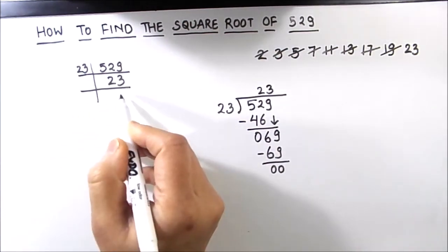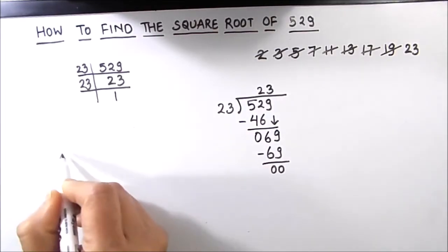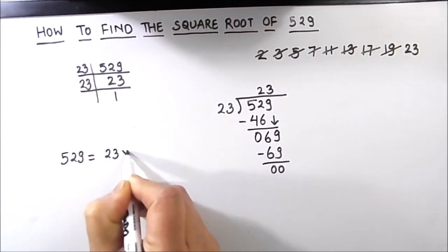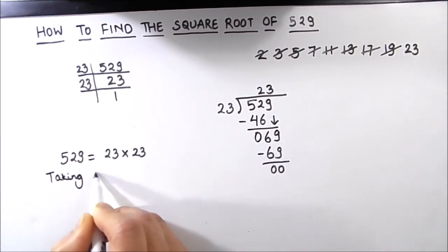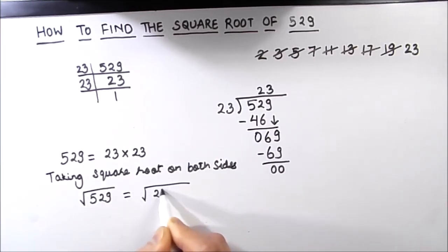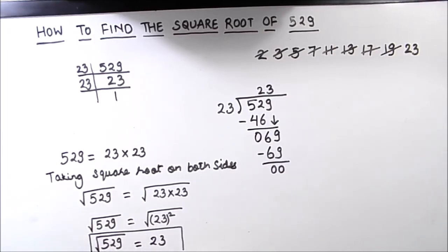Since 23 is a prime number, it is only divisible by 23 and 1, so 23 times 1 is 23. We can write 529 as the product of its prime factors: 23 times 23. Taking the square root on both sides, we get square root of 529 equals square root of 23 times 23, which is 23 squared. The square root of a squared number is the number itself, so the square root of 529 is 23.